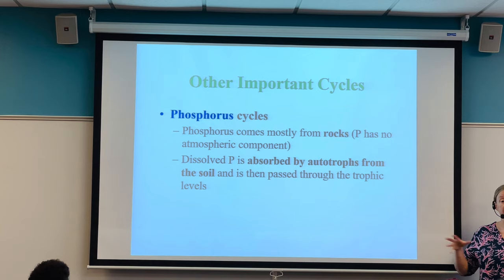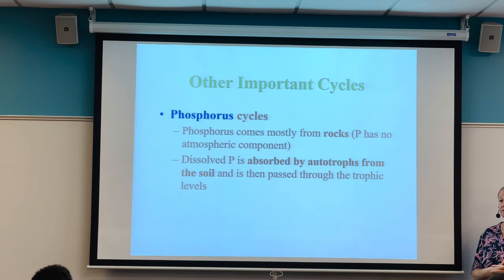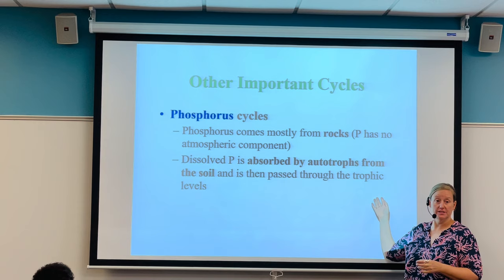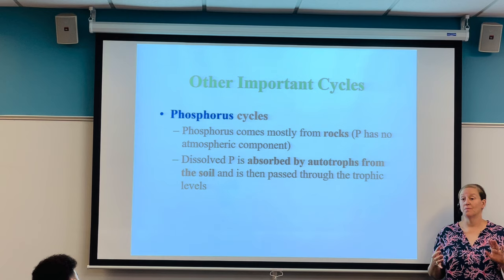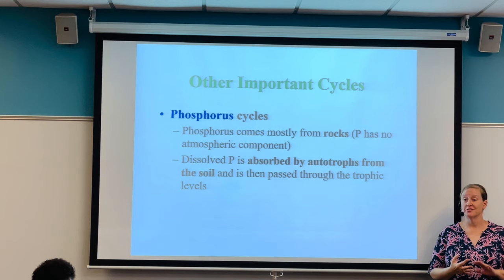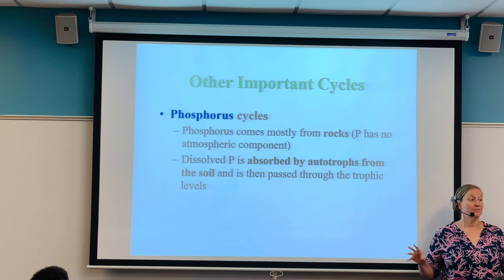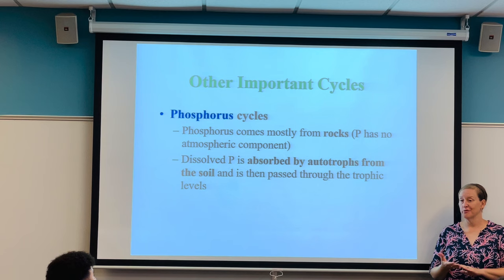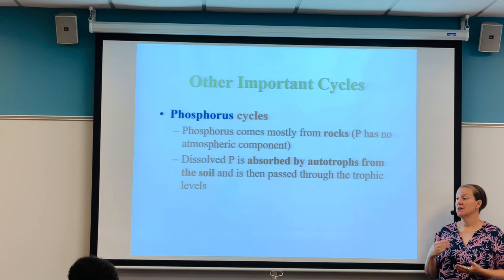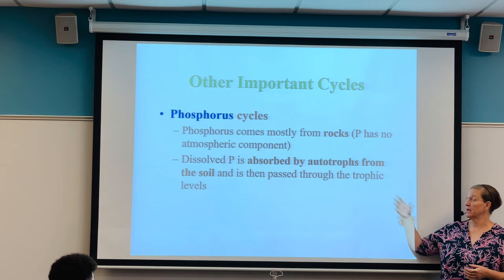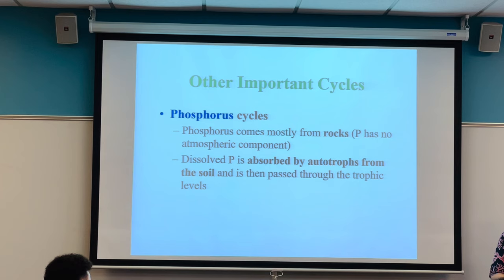Phosphorus gets dissolved from rocks into the soil, then gets taken up through the roots of plants with water and other nutrients. It's passed through the trophic levels — from primary producers to primary consumers, secondary, tertiary, and quaternary consumers. When all of those organisms die, the last bits of energy are taken up by detritivores and decomposers, and the nutrients are recycled back into the soil.